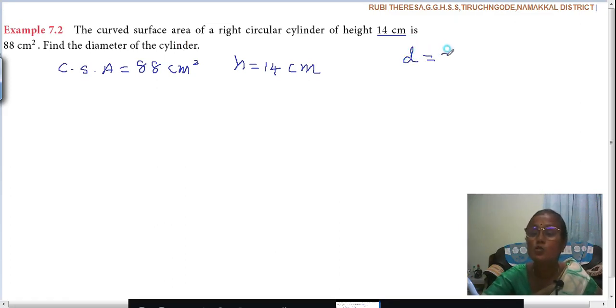Diameter means twice the radius, 2R. Radius is multiplied by 2. Suppose this is the cylinder. Suppose if this is the center, then this is the radius. Diameter means fully, that means 2R.